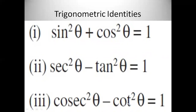These three are the three identities which you use in exercise 11.4 to solve the sums. Once again: the first identity is sin²θ plus cos²θ is equal to 1. The second identity is sec²θ minus tan²θ is equal to 1. And the third identity is cosec²θ minus cot²θ is equal to 1.